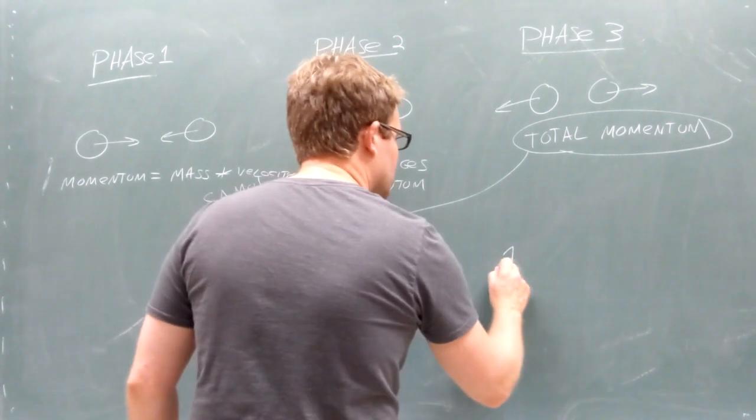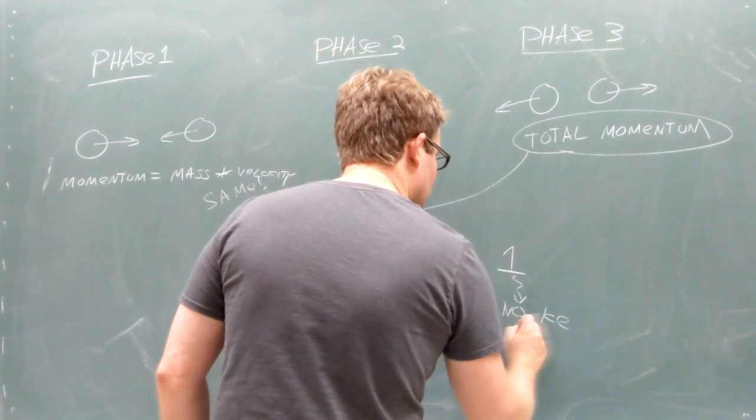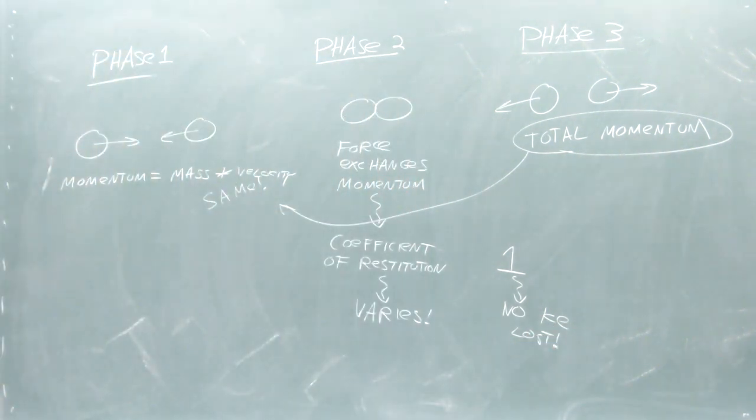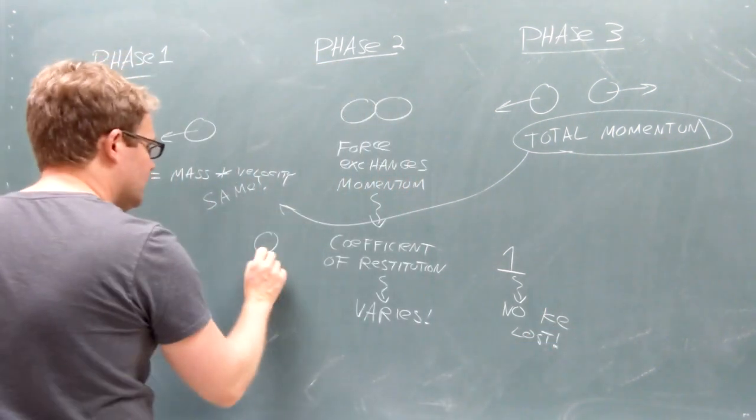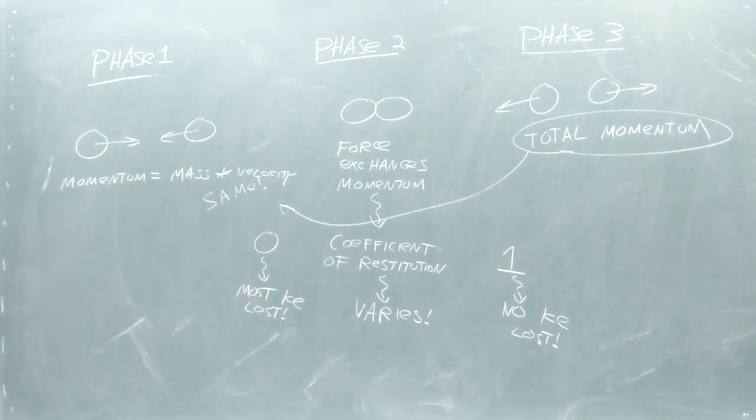A coefficient of 1 means that none of the kinetic energy is lost and we have an elastic collision. We can think of this as the bounciest of all possible collisions. And a coefficient of restitution of 0 means that we lose the most kinetic energy possible.